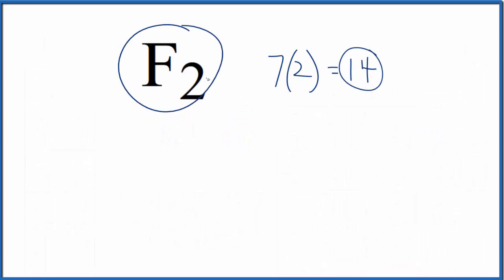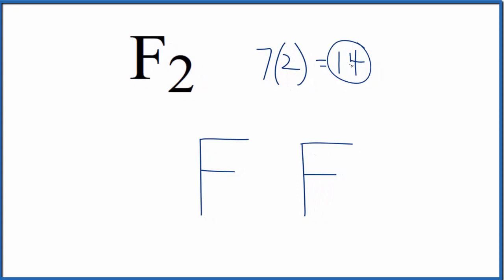So we have two fluorine atoms in F2, so we'll write F next to each other. We have a total of 14 valence electrons here for this F2 Lewis structure. We put two between the atoms, and that forms the chemical bond. These electrons are shared between the two fluorine atoms.